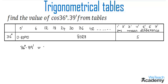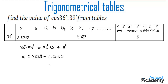So cos 36 degrees 39 minutes equals the value at 36 degrees 36 minutes plus 3 remaining minutes. The value for 36 degrees 36 minutes, prefixing the decimal point, is 0.8028. The mean difference for 3 minutes is 5, and prefixing the decimal point gives 0.0005.